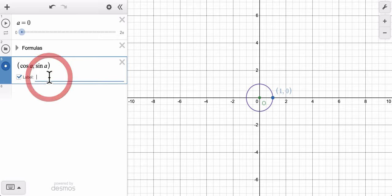If I label this point q, I can see it there on the graph. If I toggle my angle, I'll see that q travels around the circle. There it goes.